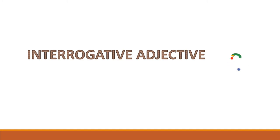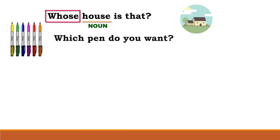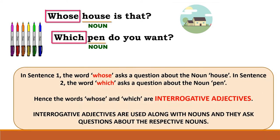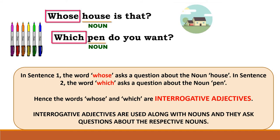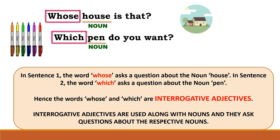Next we have the interrogative adjective, which is all about asking questions about the noun. 'Whose house is that?' — the noun is house and whose is the adjective. 'Which pen do you want?' — the noun is pen and which is the adjective. Words like whose, which, etc. ask questions about the noun and are called interrogative adjectives. Here too, these words must be immediately followed by nouns.